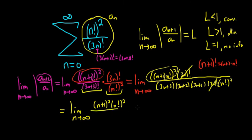And then we have on the bottom 3n plus 3, 3n plus 2, and then 3n plus 1. And then we have the n factorial squared, which coincidentally also cancels.